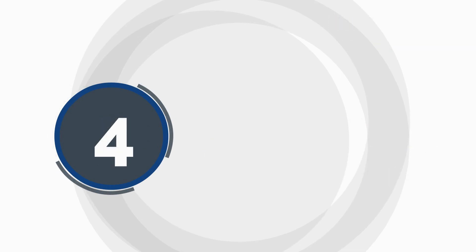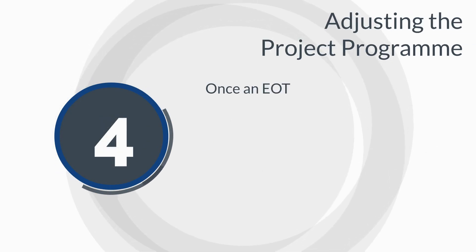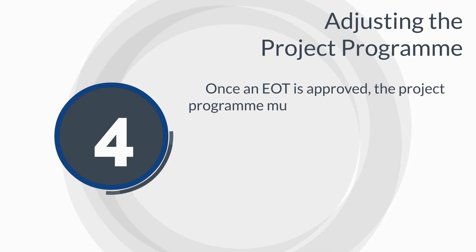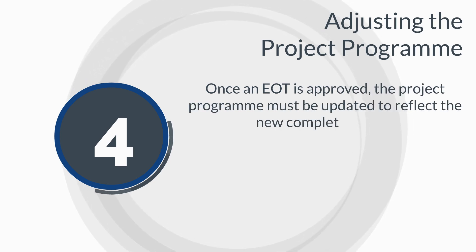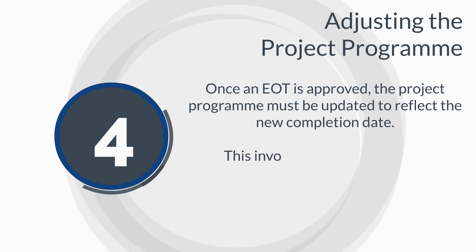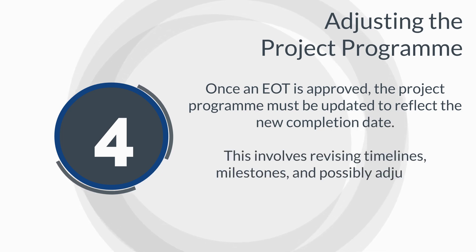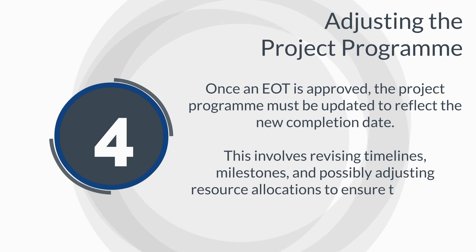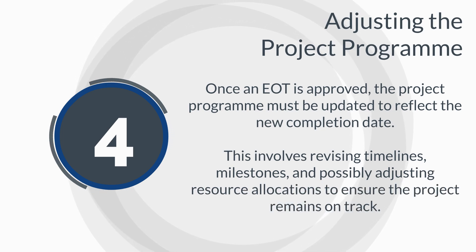Number 4: Adjusting the Project Program. Once an EOT is approved, the project program must be updated to reflect the new completion date. This involves revising timelines, milestones, and possibly adjusting resource allocations to ensure the project remains on track.